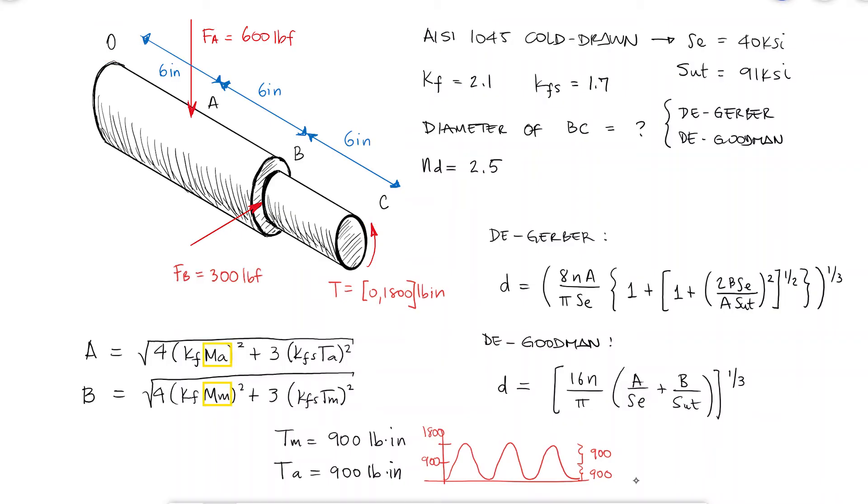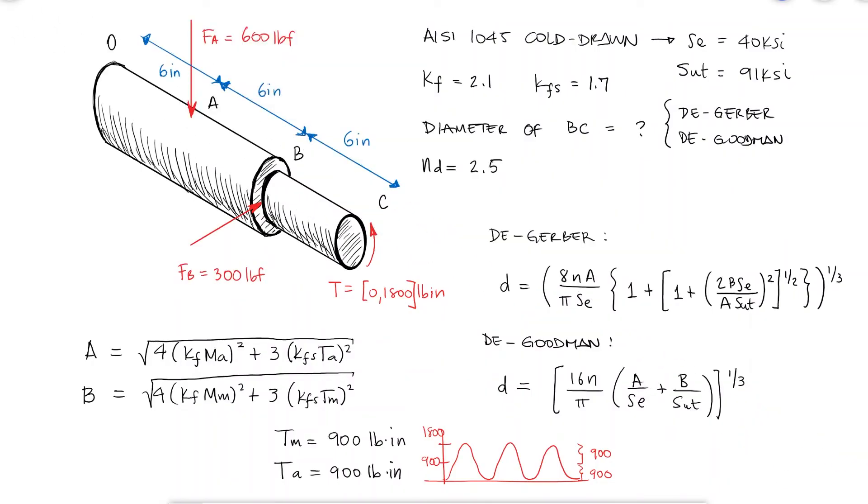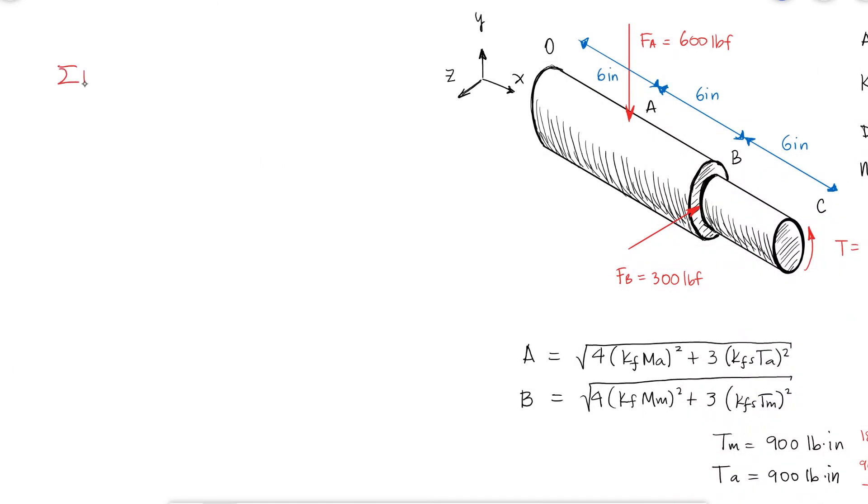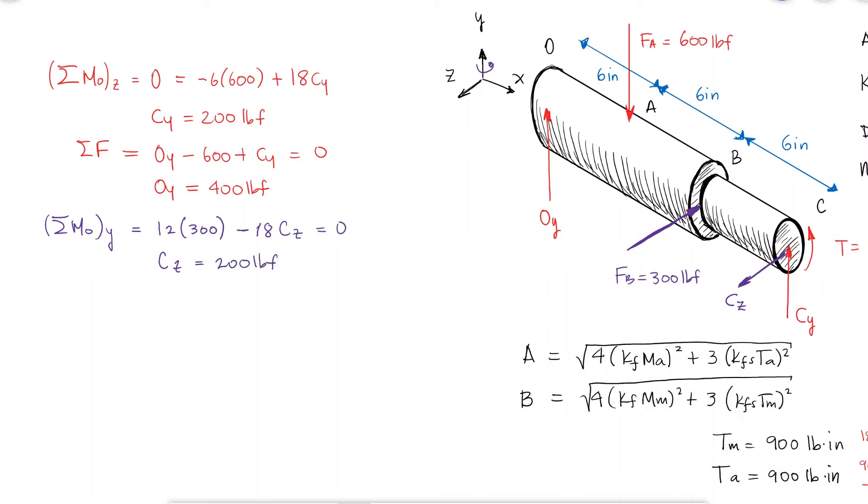For the mean and alternating moments, however, we need to find the location where the normal stress due to bending is maximum. A sum of moments about O in the Z direction will allow us to find the reaction at C in the Y direction. A sum of forces in the Y direction finds the reaction at O in the y-direction. A sum of moments about O in the y-direction will allow us to find the reaction at C in the z-direction, and the sum of forces in the z-direction gives the O-reaction in the z-direction.